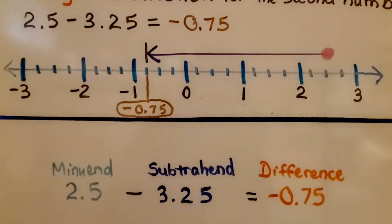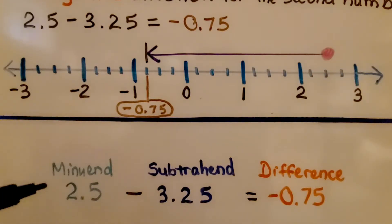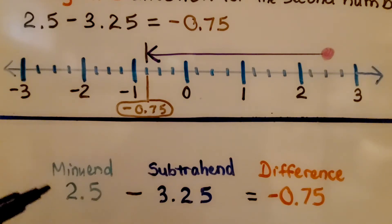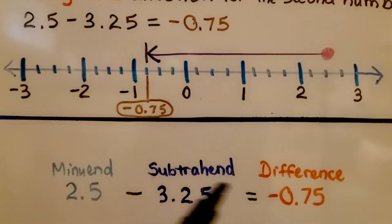Remember from grade school: the first number in subtraction is the minuend. We're taking away the subtrahend, and of course the answer is the difference.